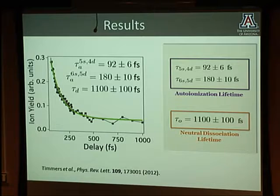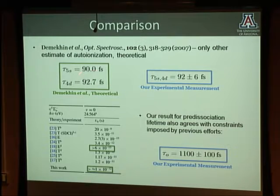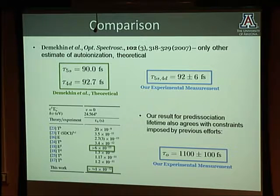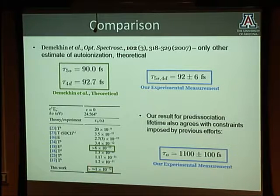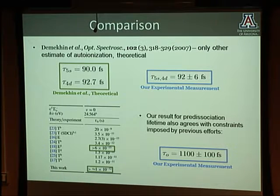Applying our analysis to the decay, we extracted two independent numbers: the autoionization lifetime of a 5s electron—a Rydberg electron equivalent to a 5s electron attached to an oxygen molecule—and the predissociation lifetime. There was no experiment to compare with for autoionization, but a 2007 theoretical calculation gave a number very close to ours. Theory could separately resolve the 5s and 4d electron autoionization lifetimes; we gave an average. The predissociation time matched the available bound, addressing outstanding questions in XUV studies of molecules.